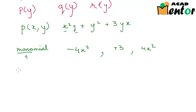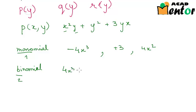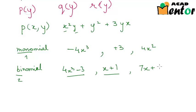Let's look at what a binomial is. Bi means 2, so a binomial is a polynomial with two terms. For example, 4x cubed minus 3 is a binomial. Similarly, x plus 1 is also a binomial, and 7x plus 3x cubed is also a binomial.